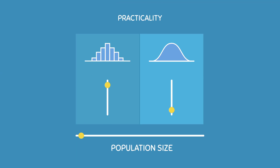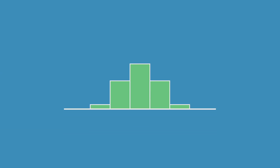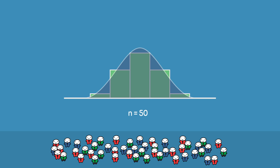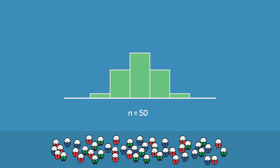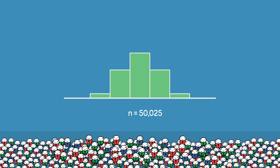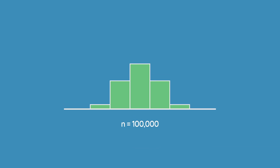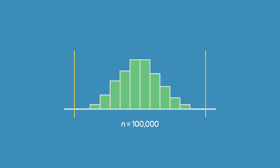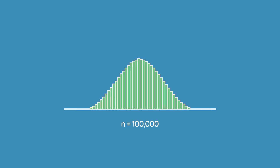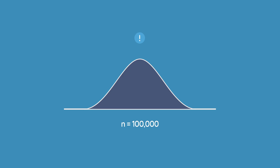The use of density curves becomes more practical the larger your population is. If we made a histogram from data collected from 50 people and drew a density curve over it, we have a lot of missing gaps, and our density curve can be inaccurate. Now imagine if we had a population of 100,000 people instead. Because our population is so big, we can continuously reduce the length of each interval until we end up with a histogram that can be accurately represented by a density curve. This is why density curves are so valuable — they aren't limited by intervals and are very useful with large populations.